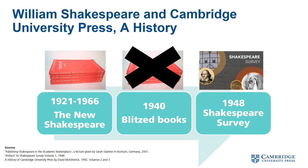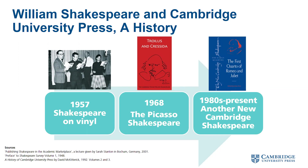By 1966, there were new Shakespeare editions of every play. During the Second World War in 1940, a couple of these texts went completely out of print due to a warehouse being destroyed during the Blitz. In 1948, the first publication of Shakespeare's Survey launched — an annual yearbook of Shakespeare studies aimed at scholars, theatre workers, and archivists, which is still publishing today. In 1957, the press produced its first audio versions of Shakespeare's plays, with the Dover Wilson editions licensed to Argo, who produced LP recordings featuring actors from the Marlowe Dramatic Society alongside professional actors.